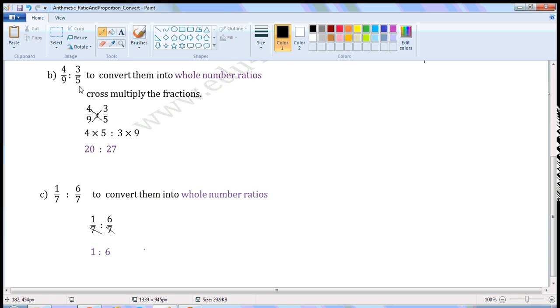4/9 is to 3/5. Now see if there are any common factors for 20 and 27. If there are no common factors, leave the ratio as it is. If there are common factors, we can simplify into lowest terms.